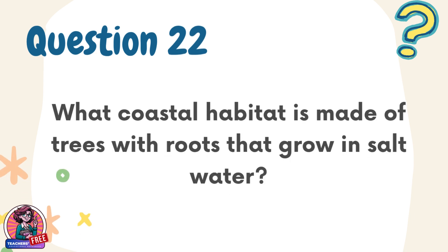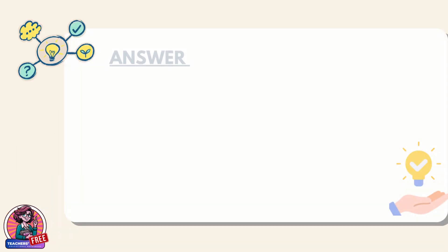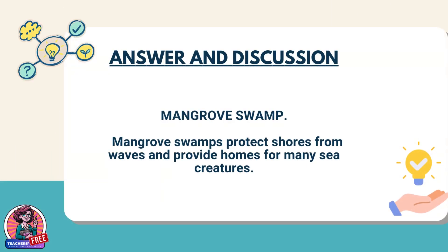Question 22. What coastal habitat is made of trees with roots that grow in salt water? Answer: Mangrove swamp. Mangrove swamps protect shores from waves and provide homes for many sea creatures.